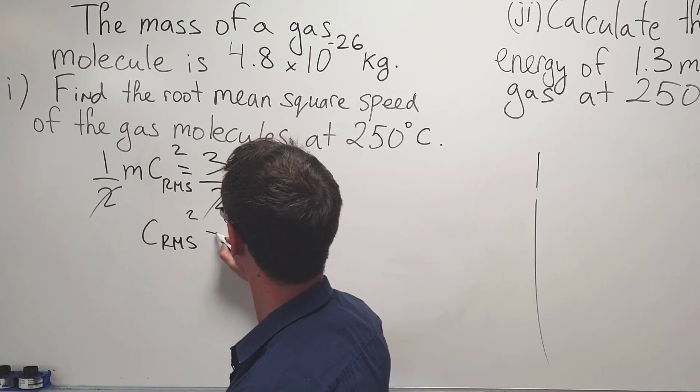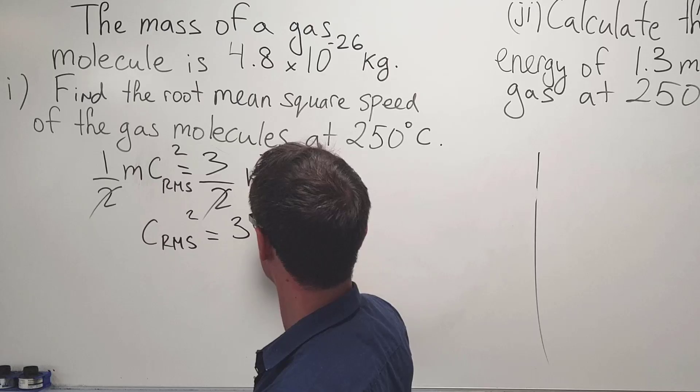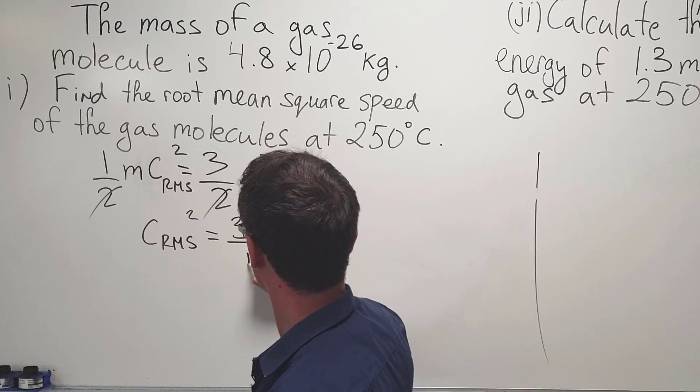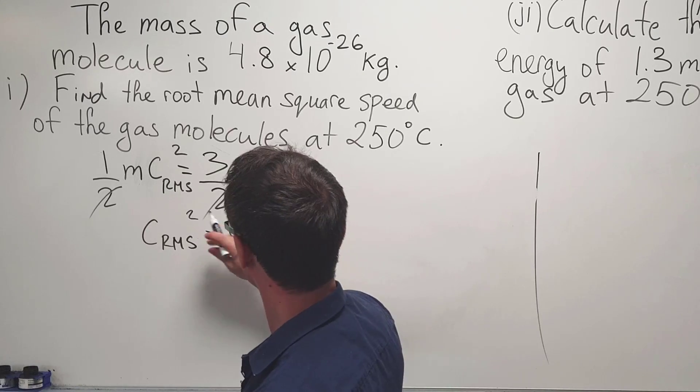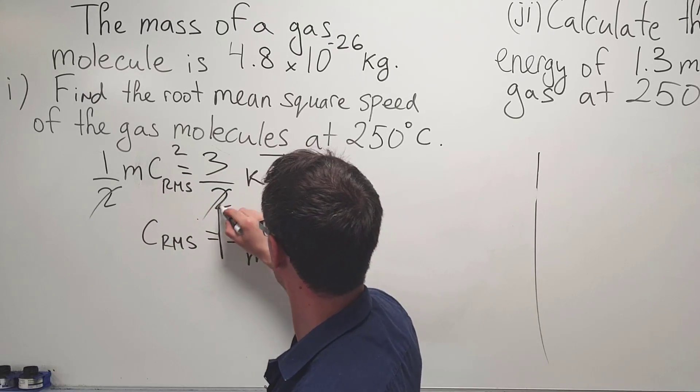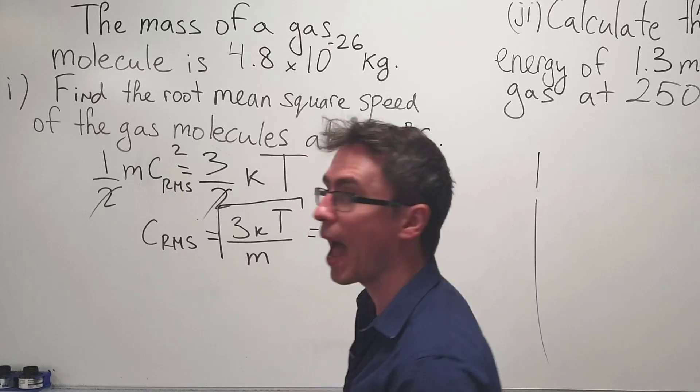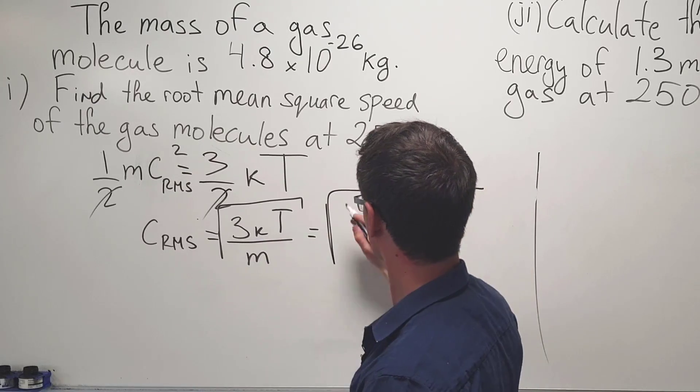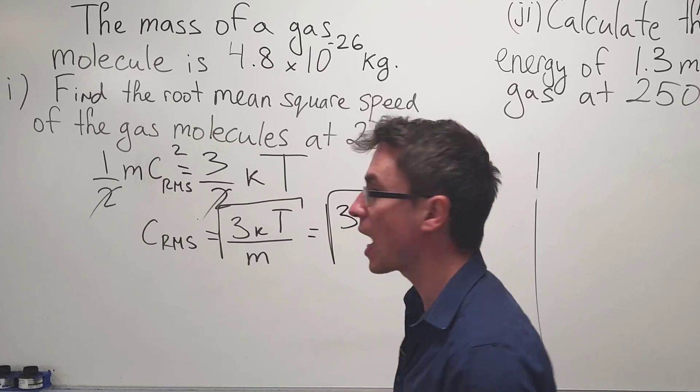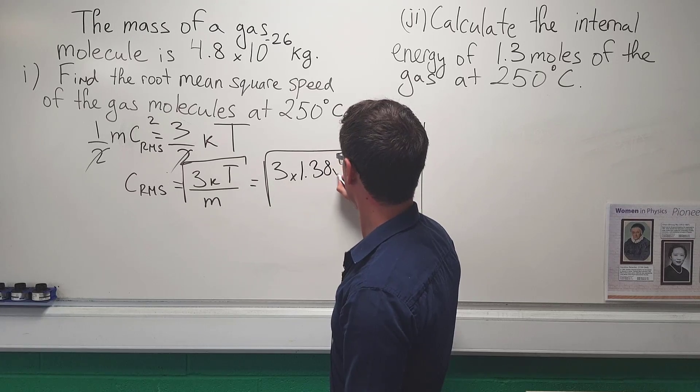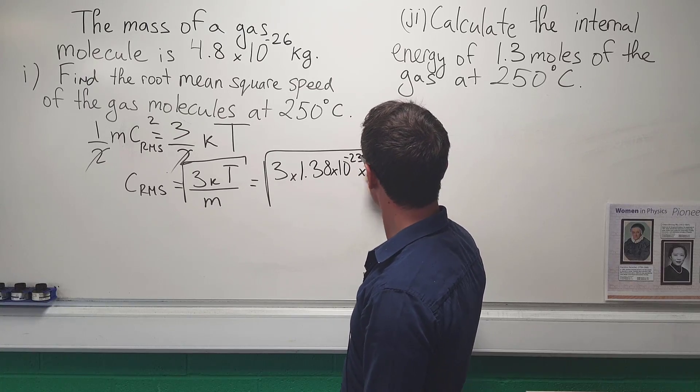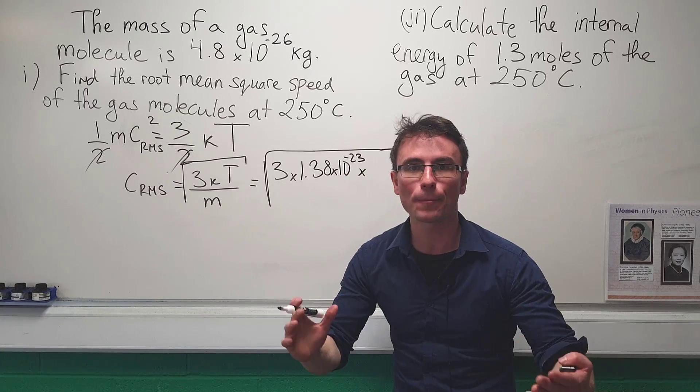So, the RMS squared will be equal to three times Boltzmann's constant times T divided by the mass M. And also, let's square root everything and what we're going to get is that the RMS speed will be equal to the square root of three times 1.38 times 10 to the power of minus 23 multiplied by the temperature, which is